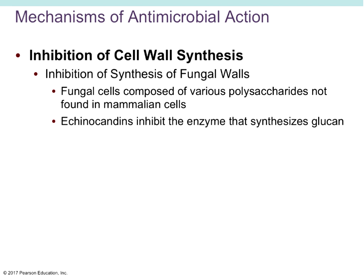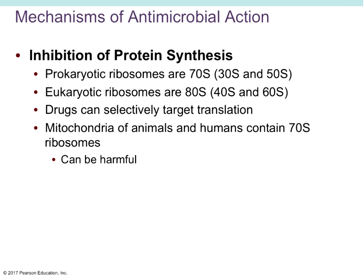For inhibition of fungal cell walls — these are eukaryotic cells, so their cell walls are not made out of mycolic acids or peptidoglycan NAG and NAM. Fungal cells are composed of different types of polysaccharides not found in mammalian cells. Things like mannan and glucan are not found in eukaryotic mammalian cells because we don't have a cell wall. Echinocandins prevent the enzyme that makes glucan — and since we don't have that particular polysaccharide in our own cells, this gives us selective toxicity against fungal infections.